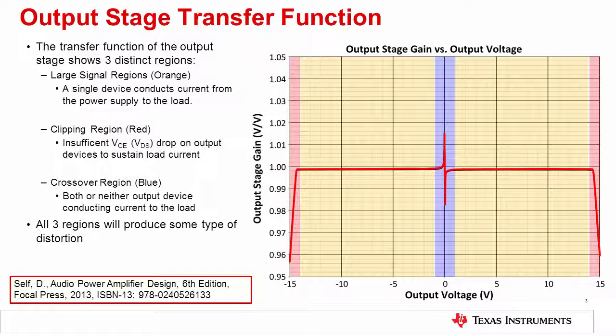In the next slide, we will zoom in on the large signal region so that we can see the non-linearity of this part of the curve. The new y-axis range will go from 0.998 to 0.999 instead of 0.95 to 1.05 volts per volt as shown here.